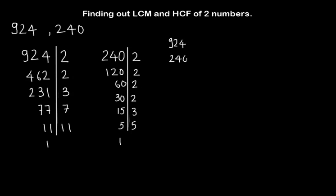So now let's express 924 and 240 in its multiplication of prime factor form. So 924 can be written as 2 into 2 into 3 into 7 into 11. And 240 could be written as 2 into 2 into 2 into 2 into 3 into 5.